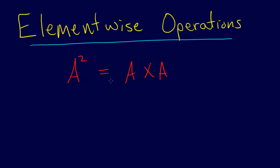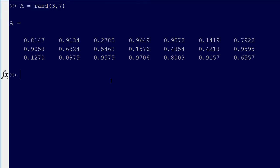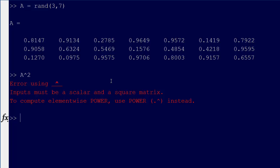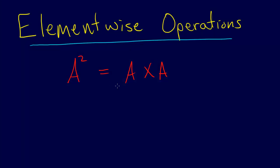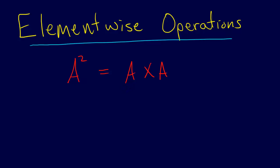Let me just flip over to MATLAB to show you what I'm talking about. Let's say we have a, and it's some random matrix of size 3 by 7. And so there it is, and let's say we go a squared — and it says it can't do that. The reason we can't do that is a is, in this example, 3 by 7, so 3 by 7 times 3 by 7 — and you know that these dimensions don't match, so we can't do the multiplication.